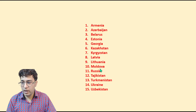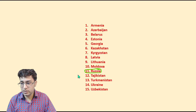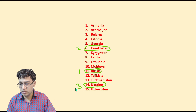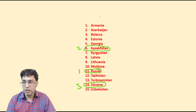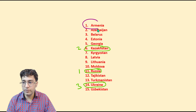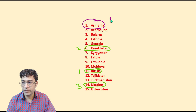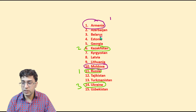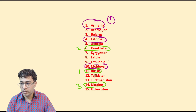Out of the 15 former USSR countries, the largest in size is Russia, the second largest is Kazakhstan, and the third largest is Ukraine. The smallest of all 15 countries is Armenia, the second smallest is Moldova, and the third smallest is Estonia.